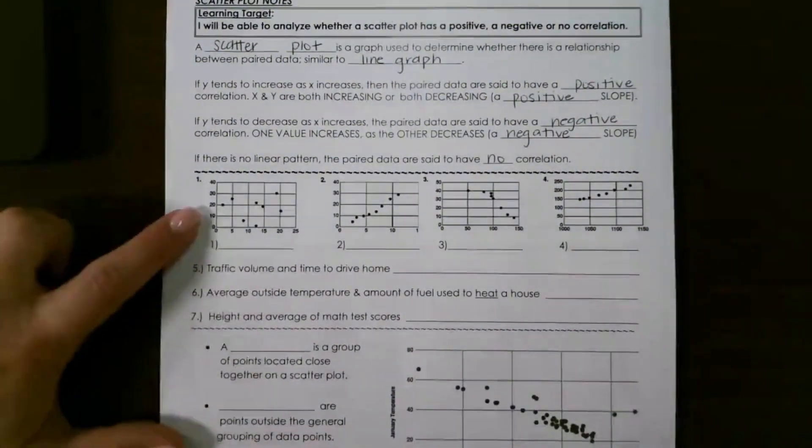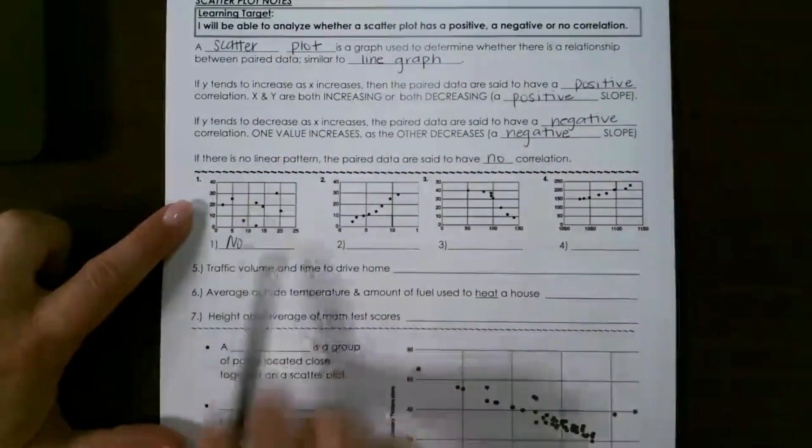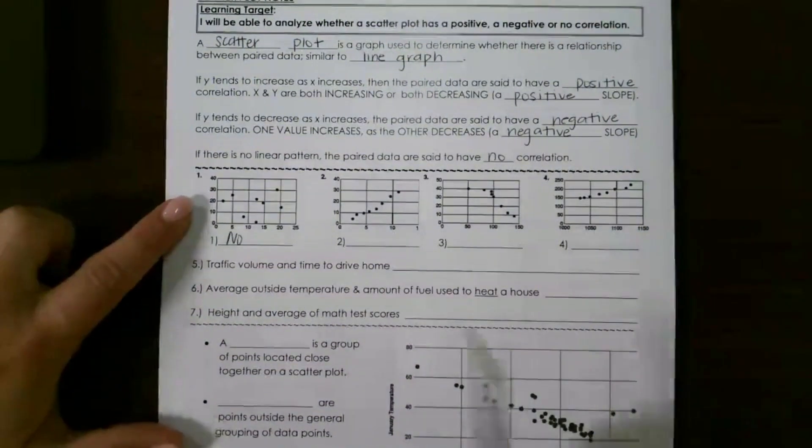Let's look at the first one. There is no correlation here because they do not have a positive or negative slope. There is no line.